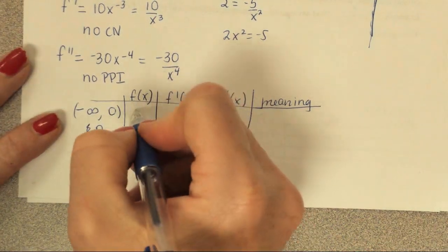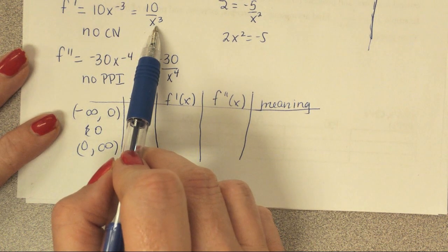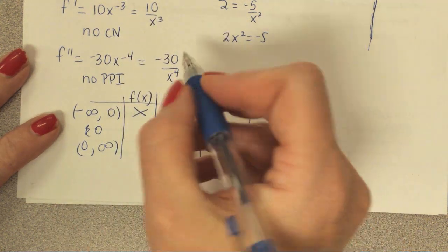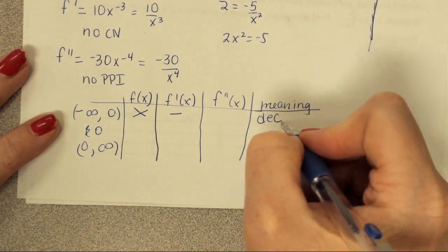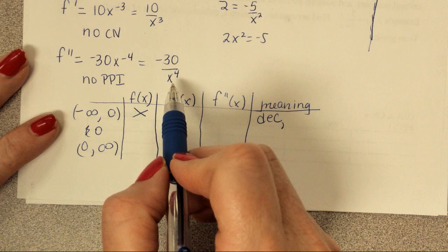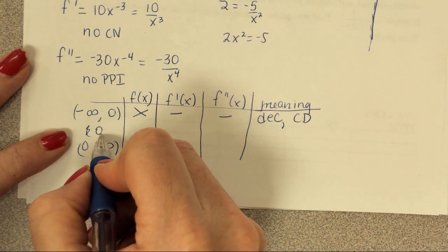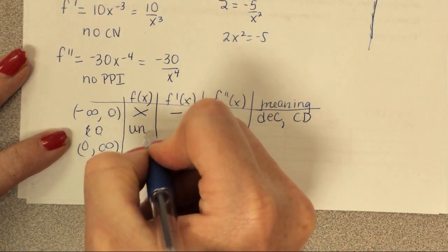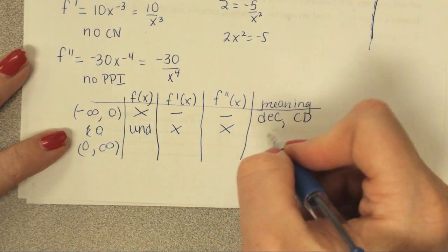We plug negative one not into the original, just into the first derivative — it is negative, which means decreasing. Plug negative one into the second derivative — it is negative, which means concave down. Zero gets plugged only into the original function, and it's undefined, which means it's a vertical asymptote.